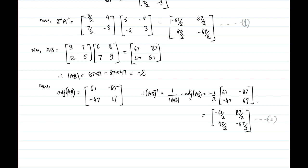From equations 1 and 2, we can clearly see that AB whole inverse equals B inverse A inverse. Tallying both equations confirms that B inverse A inverse and AB whole inverse are the same. Hence verified. This problem is done.